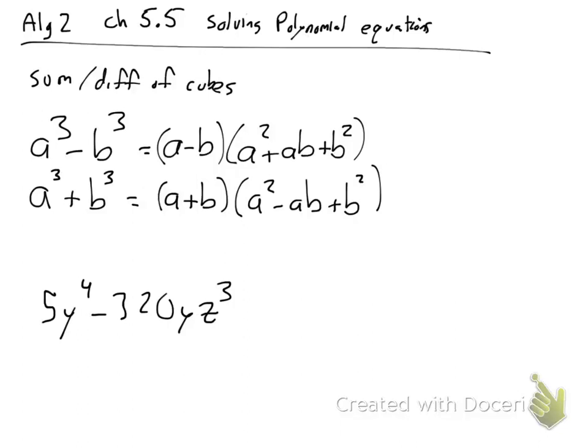Algebra 2, this is 5.5, solving polynomial equations. We've already done a lot of this back in chapter 4. I made you go through a whole bunch of factoring. So we're just going to quickly talk about this, show you the scale or the idea of all of this.